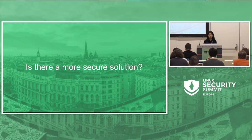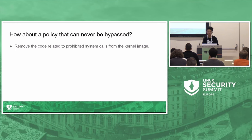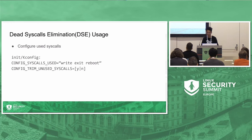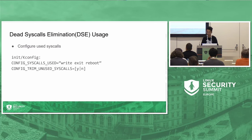So, is there a better solution to reduce the system's attack surface? Here's an idea: if we could remove system calls from the kernel during compile time, attackers wouldn't be able to exploit something that doesn't exist. Seccomp can be bypassed, but this one is impossible to bypass. We propose Dead System Call Elimination, DSE. Because the usage is similar to seccomp, we just record the system calls that the program will use and configure it when we compile the kernel. The linker will remove all the code related to the unused system calls while ensuring the rest of the kernel continues to work normally.